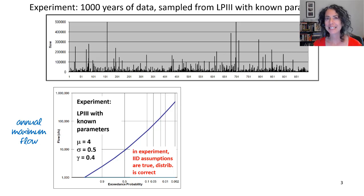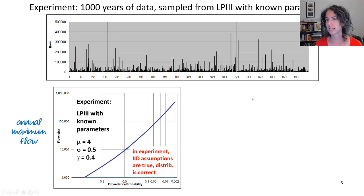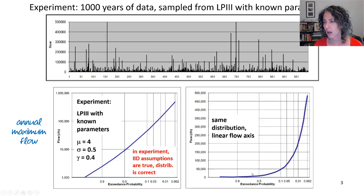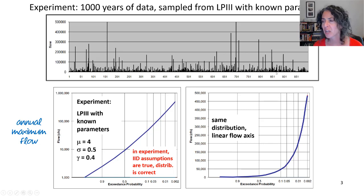This is truly a best case. Any uncertainty that we see in this experiment is going to be less than the uncertainty truly is in reality. Since I plotted flow on the linear axis, I'm going to redraw my probability distribution also with a linear axis, so you can line up this distribution to the flows we're seeing.